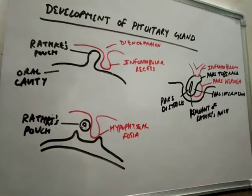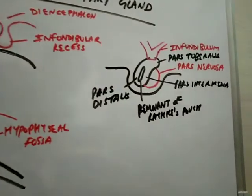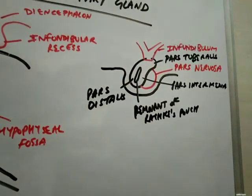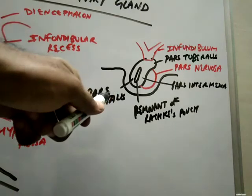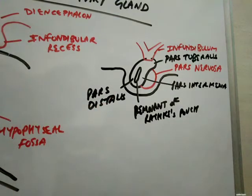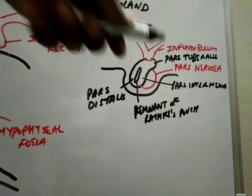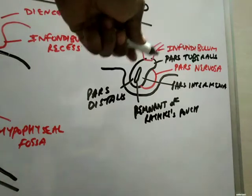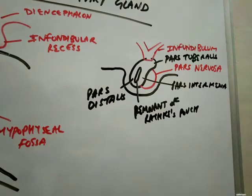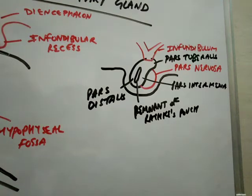Rathke's pouch gives three derivatives. First is the pars distalis, which forms the thick anterior wall. Second is the pars tuberalis, which forms the upper part of the anterior wall and surrounds the infundibular recess. Third is the pars intermedia, which forms the thin posterior wall.